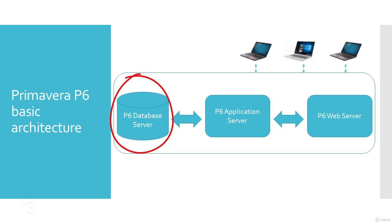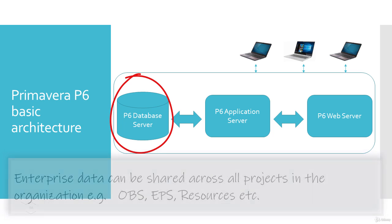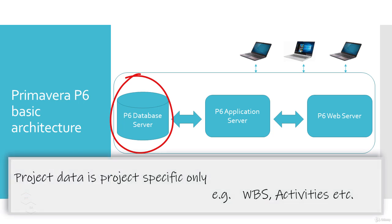Do you know the difference between project data and enterprise data? Enterprise data can be shared across all the projects in the organization. Examples of enterprise data are OBS, EPS, and resources. Project data, on the other hand, is project-specific only — it is available only for the project for which it is created. Examples of project data include work breakdown structure, or WBS, and activities.